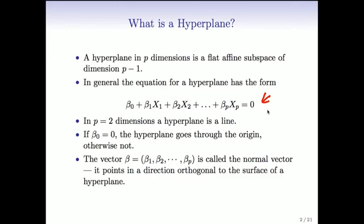And if beta zero, which is called the intercept, if that is zero, then the hyperplane goes through the origin, otherwise it doesn't.